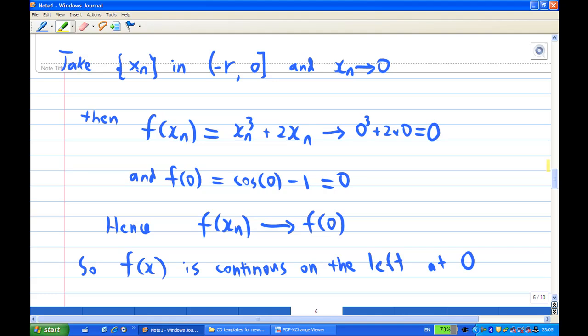So, in this case, to answer that question, we take a sequence xn on the half open interval from minus r to 0, and what you do know about r here, r is a number greater than 0, and we let the xn convert to 0.